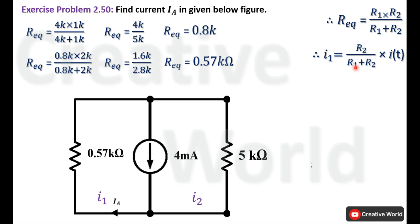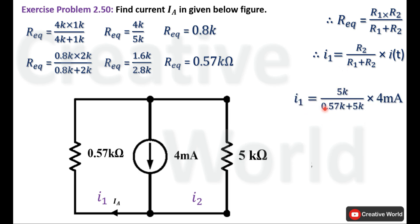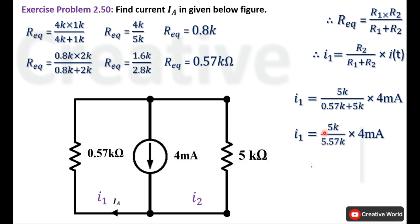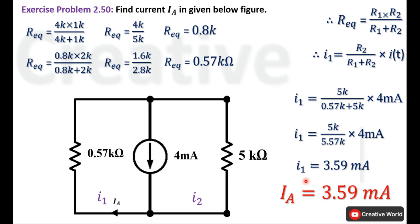R2 is 5kΩ and R1 is 0.57kΩ. Placing values into the equation: I1 = (5k / (0.57k + 5k)) × 4mA. The sum of 5k and 0.57k is 5.57k. Dividing 5k by 5.57k and multiplying by 4mA gives I1 = 3.59mA. Since I1 equals Ia, the value of current Ia in this network is 3.59mA.